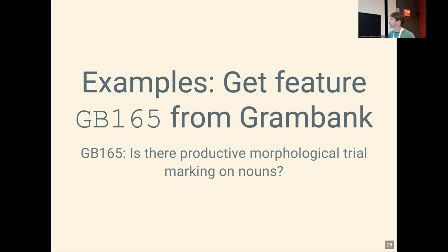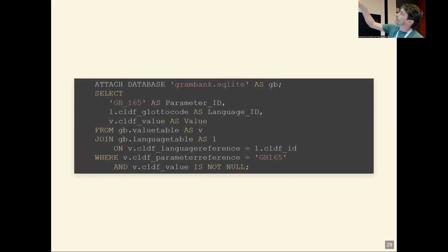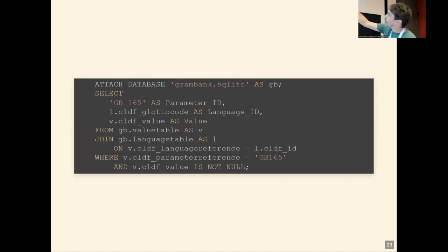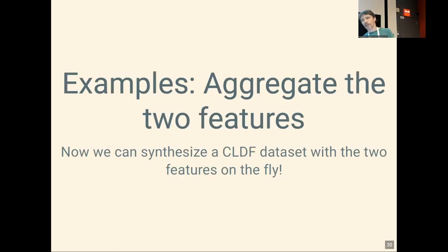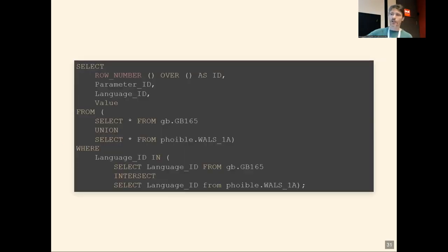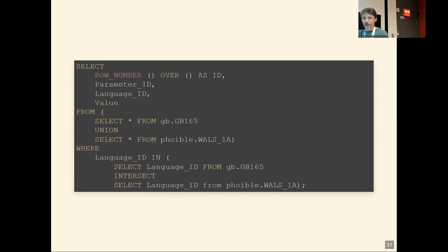Getting a feature out of GramBank is a little easier because it's a typical questionnaire-type typological database. There's a value table and a language table, and the language IDs are Glottocodes. Again we extract triples: parameter, language, and value. Plugging these two queries together is easy in SQL — you can easily combine queries into bigger ones.